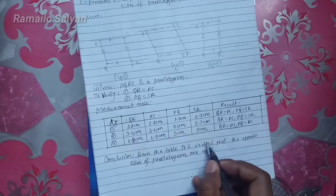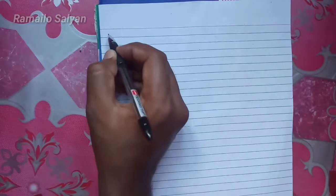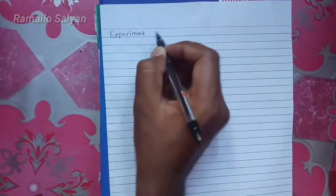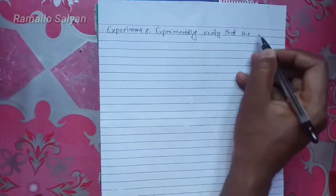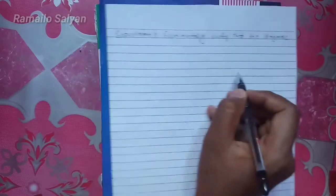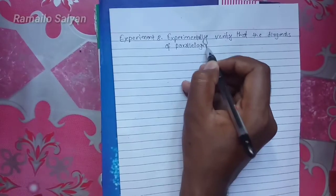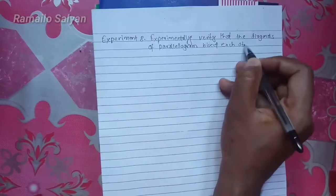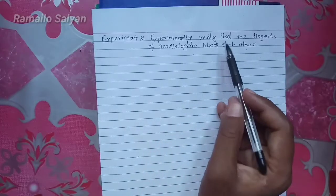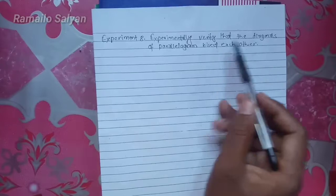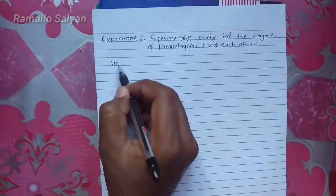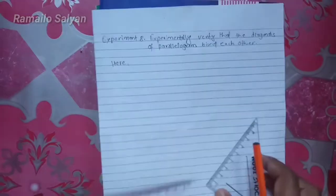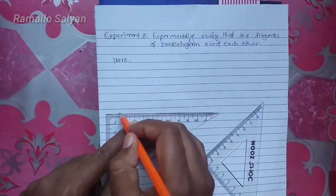We have finished experiment number seven. Now we are going to learn experiment number eight: the diagonals of a parallelogram bisect each other. A parallelogram is given and we have to verify that the diagonals bisect each other. To construct three parallelograms of different shape and size, we need a set square. Draw a line segment of any length first.